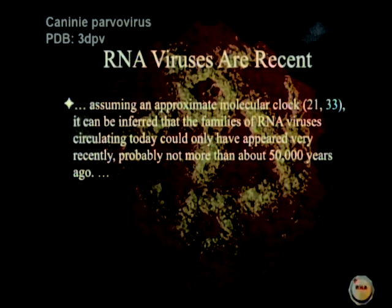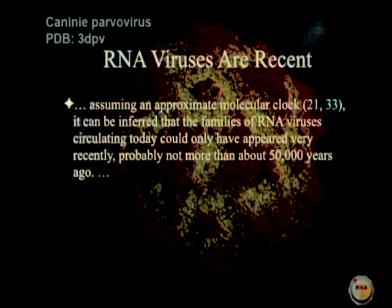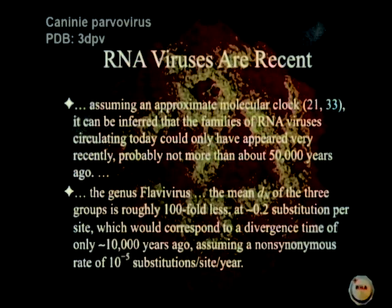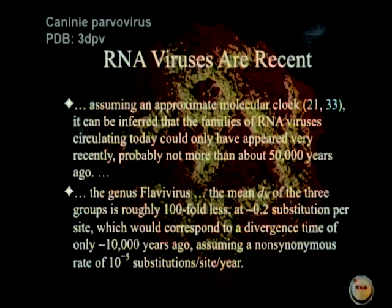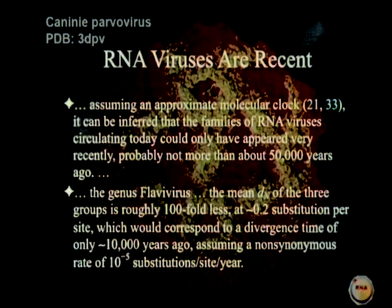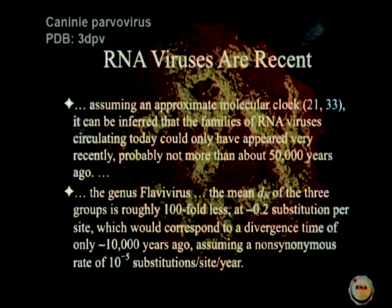To start with: assuming an approximate molecular clock, it can be inferred that the families of RNA viruses circulating today could only have appeared very recently, probably not more than about 50,000 years ago. In fact, if you read that section, you'll find that 50,000 is stretching it a bit. For example, the genus Flavivirus — that's yellow fever, dengue, that kind of stuff — the mean distance in non-synonymous RNA bases, the more difficult ones to replace, is roughly 100-fold less than the DS, at approximately 0.2 substitutions per site, which would correspond to a divergence time of only about 10,000 years ago, assuming a non-synonymous rate of 10 to the minus 5 substitutions per site per year.